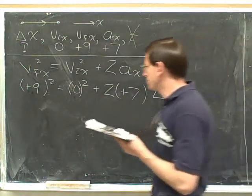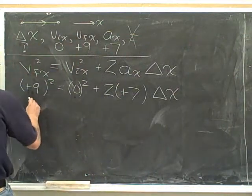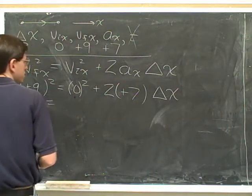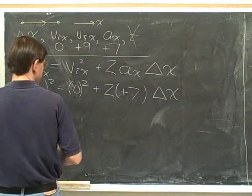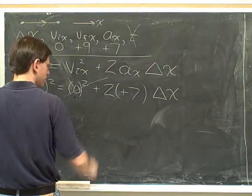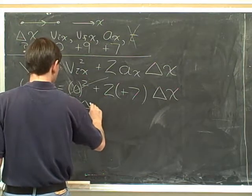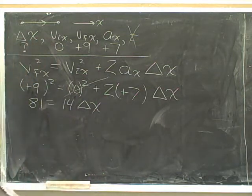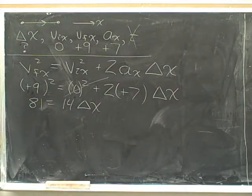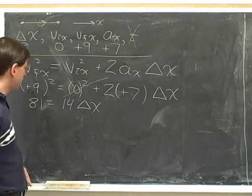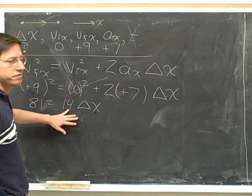Now we simplify and solve. Nine squared is 81. Zero squared is zero, so that term is going to drop out. Two times seven is 14. So we end up with 81 equals 14 times delta x. We need to get the x by itself. Get rid of the 14.